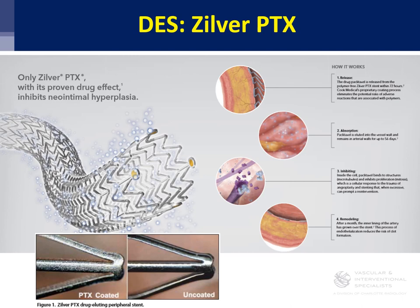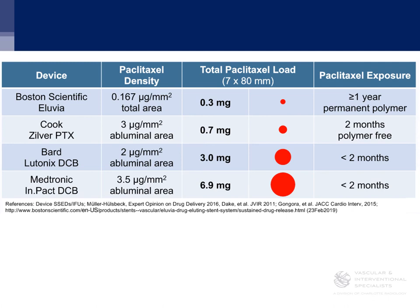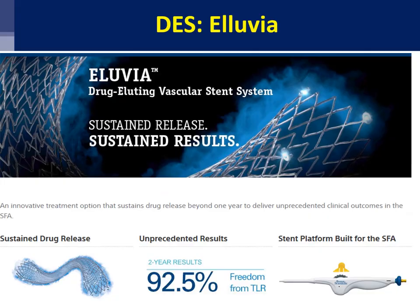In terms of drug-eluting stents, there are two on the market in the United States. The oldest is ZilverPTX, which now has five-year data — you implant it and it elutes paclitaxel into the vessel wall over time. Here's a chart comparing Alluvia, ZilverPTX, Lutonix DCB, and IN.PACT DCB by paclitaxel density — how much paclitaxel per unit area — and total dose if you treat a 7mm by 80mm segment. Some are using this to ask whether, if there is a mortality risk, it would go up with increased drug dose. That remains unsettled data.